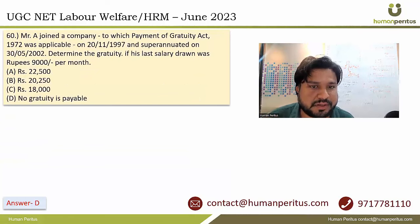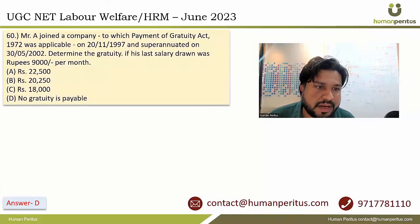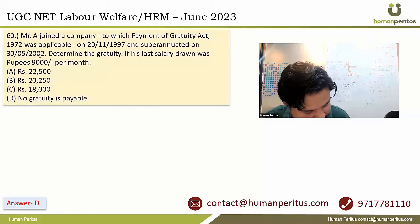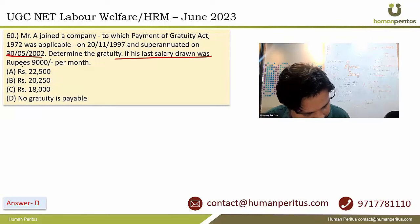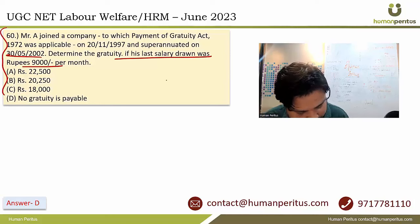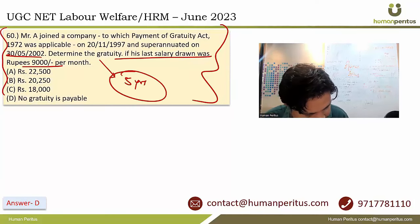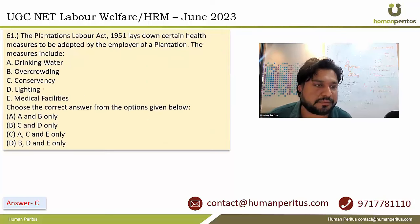Mr. A joined a company where the act is applicable. He superannuated on a particular date. We need to calculate the gratuity based on his last salary. However, the five-year criteria is not fulfilled here, so no gratuity is payable.